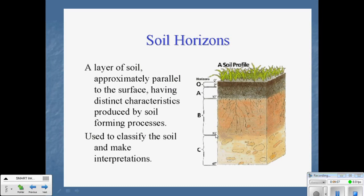And here's a picture of some different soil horizons. A layer of soil approximately parallel to the surface, having distinct characteristics produced by soil forming processes. Used to classify the soil and make interpretations. At the very top, we've got the O horizon. That's only about two inches deep. That's the organic matter. Then the A horizon. That's where you start to get very shallow roots for grasses. The B horizon. That's where you have the deeper roots, like tree roots. And then C, you've got more rock and less sediment. And then down here would be what we call the parent rock, which is not any soil at all. It's just rock.